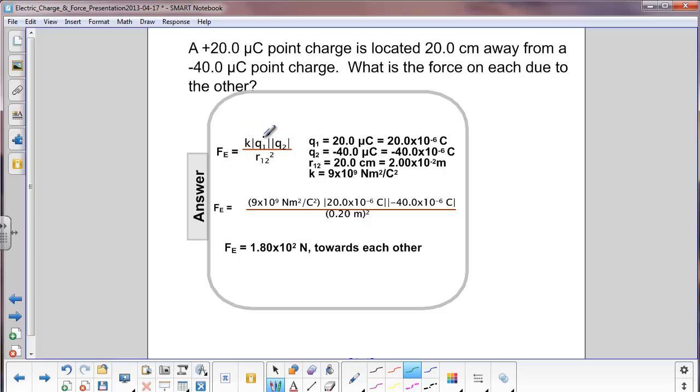which is Coulomb's constant, times the magnitude of q1, magnitude of q2, divided by the distance between them. And the labeling we use there is r sub 1,2, which is the distance between charges 1 and 2.